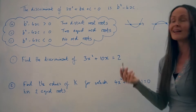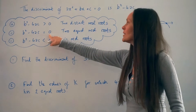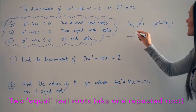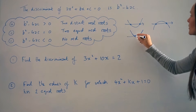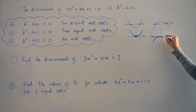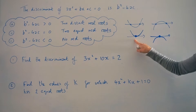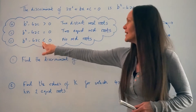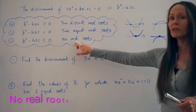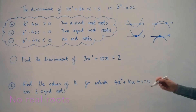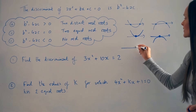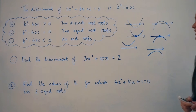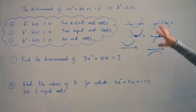If when you calculate the discriminant it equals zero, it means there are two equal real roots — just one solution — and the parabola would just touch the x-axis in one place. Finally, if the discriminant is a negative number, i.e. less than zero, it means there are no real roots, no real solutions, and the parabola wouldn't intersect the x-axis at all.